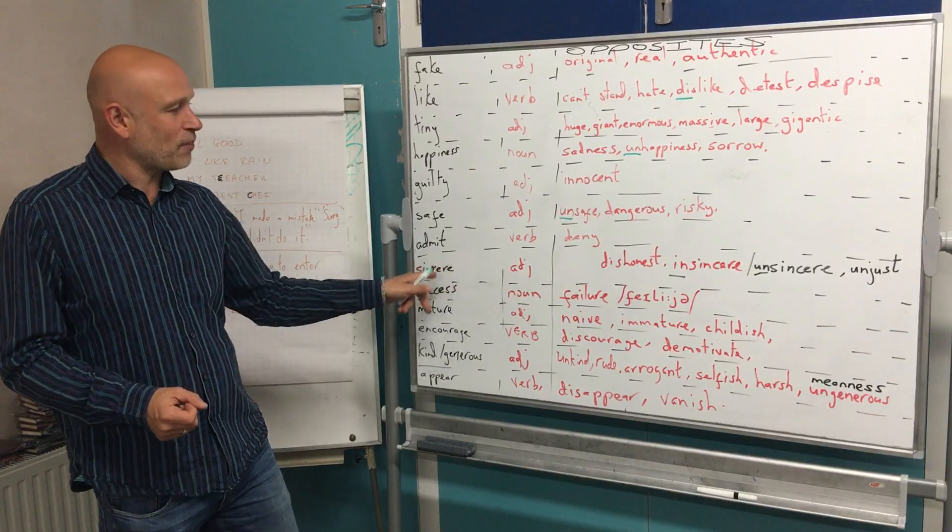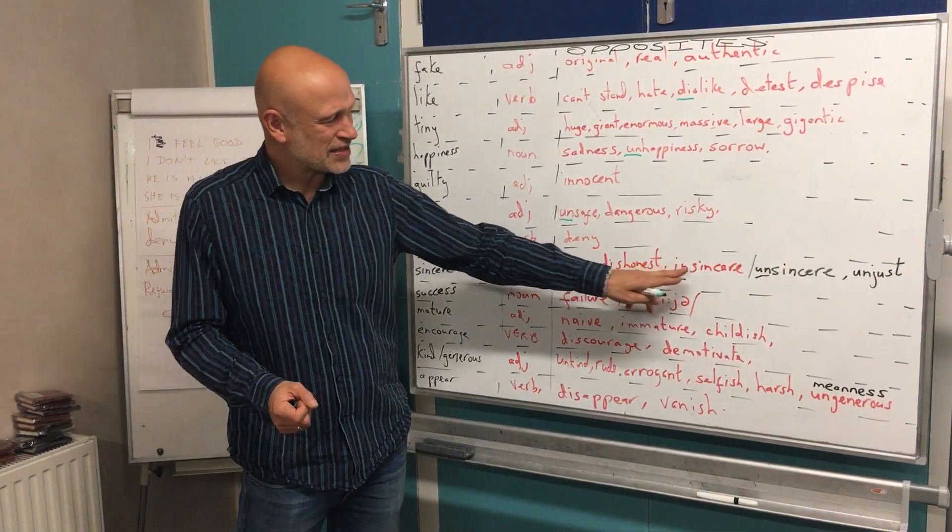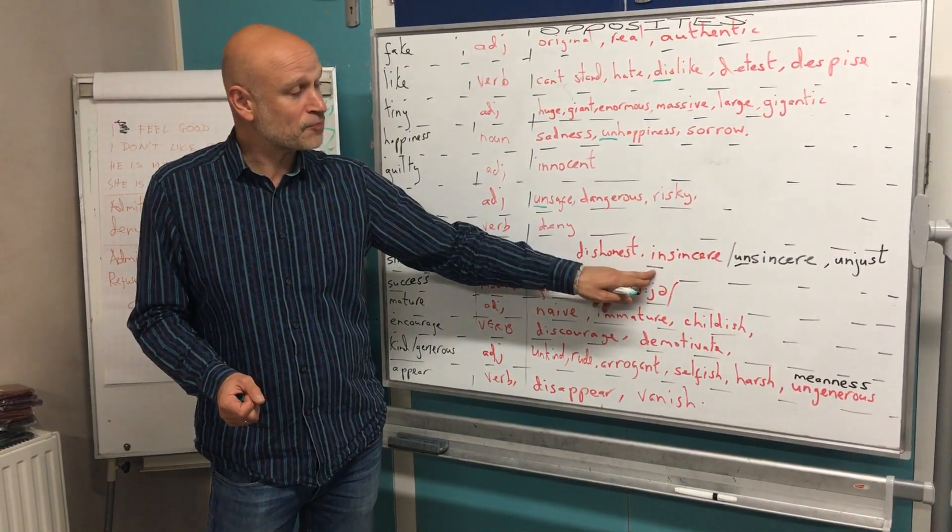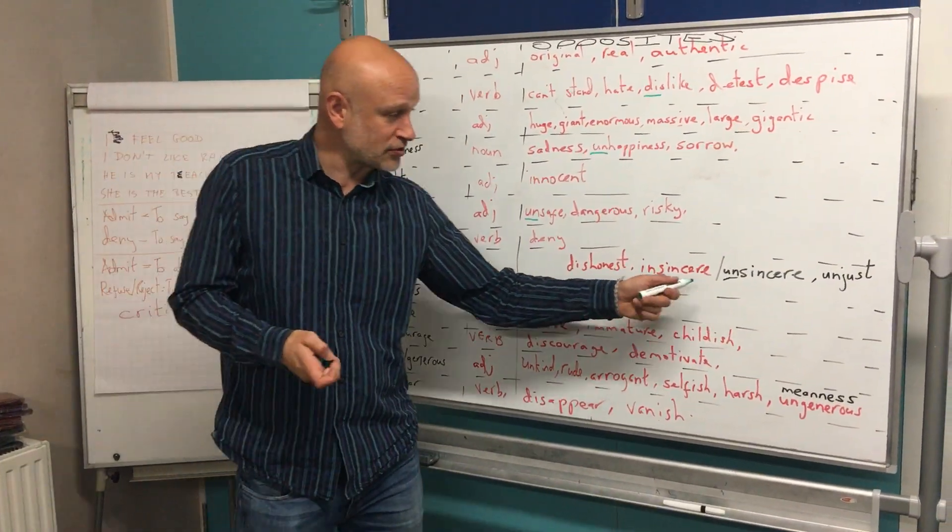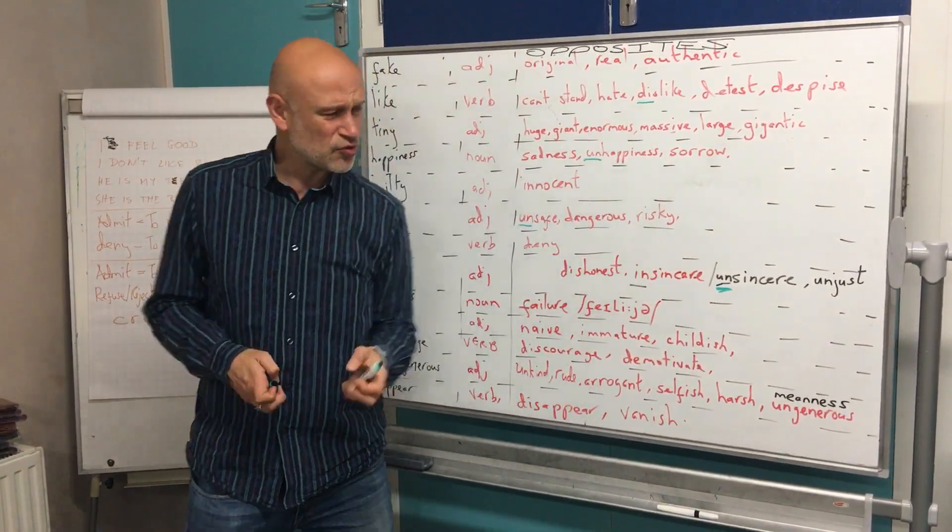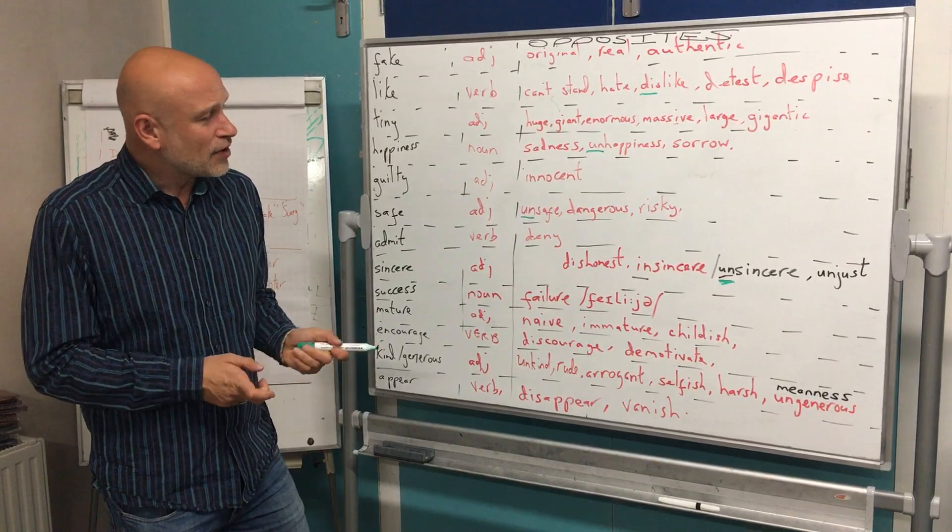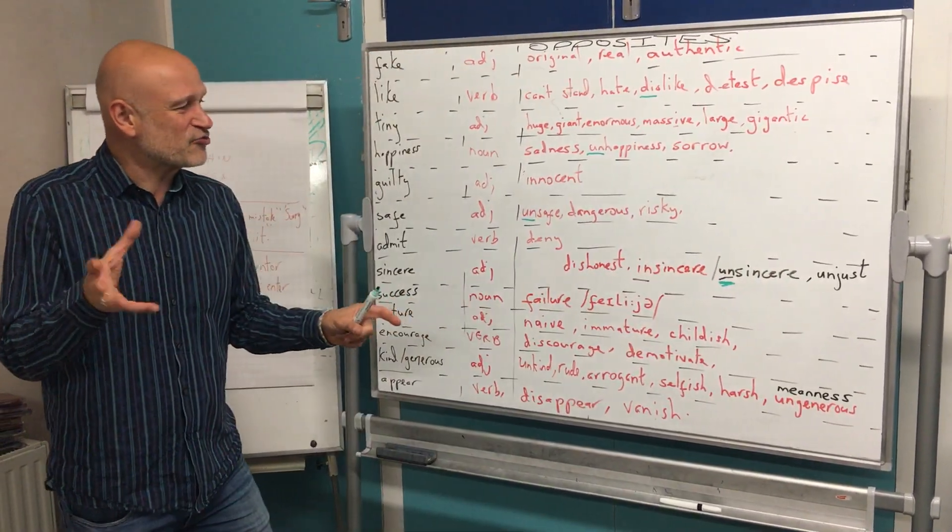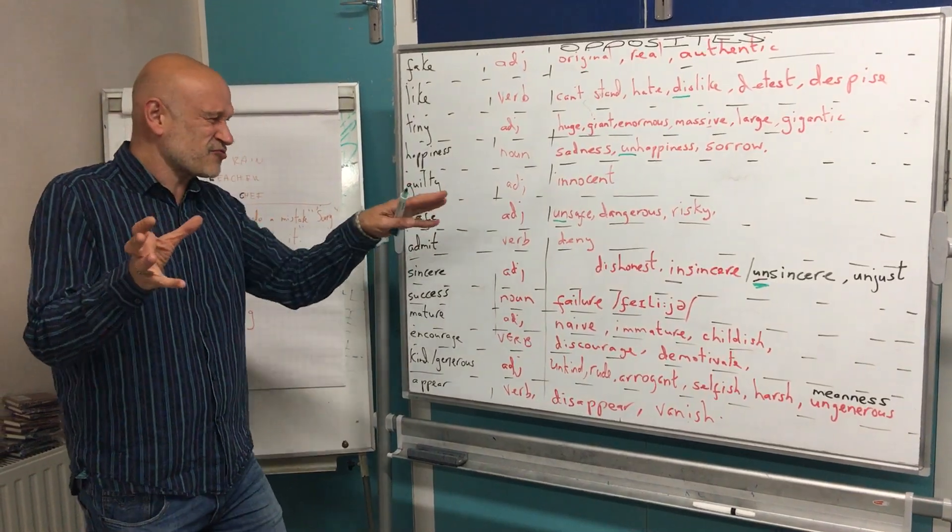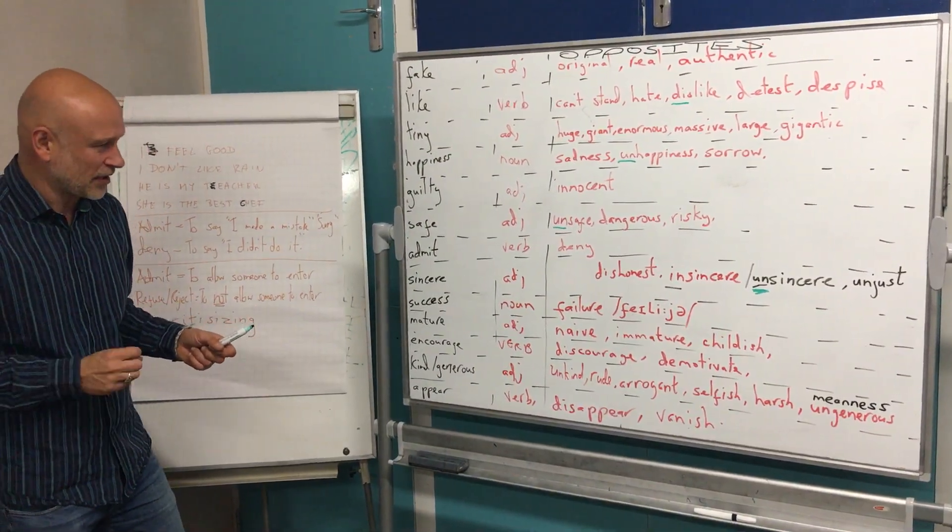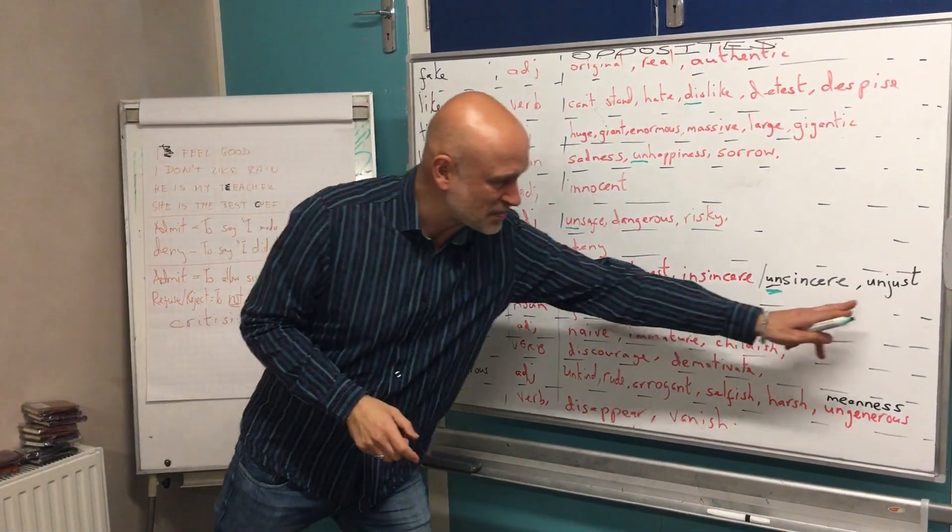Sincere is an adjective. Opposites are things like dishonest and insincere. Good prefix. But then Dida told me, she looked it up and said, actually, you can use unsincere as well. Because we were discussing it and I wasn't sure. Another thing I came up with was unjust. Unjust really means unfair. It doesn't really fit here. It's a sort of very loose synonym. But we would look at something else. So it's on the board. Unjust means unfair.